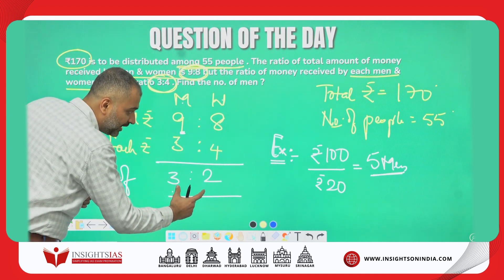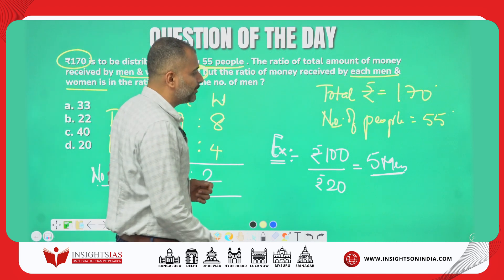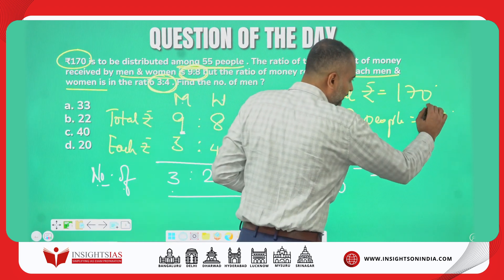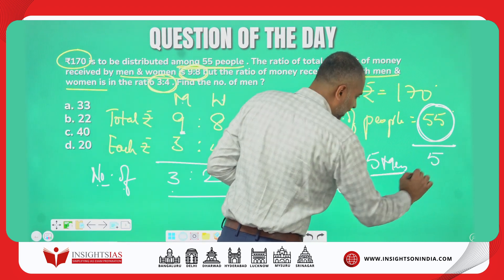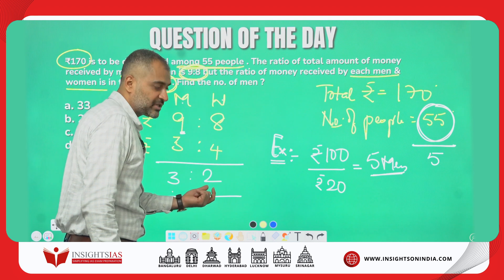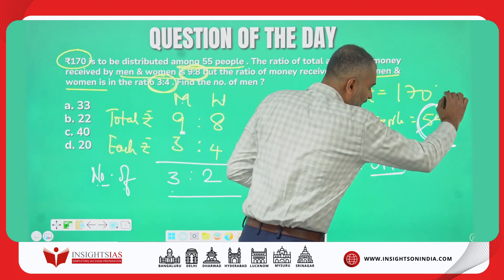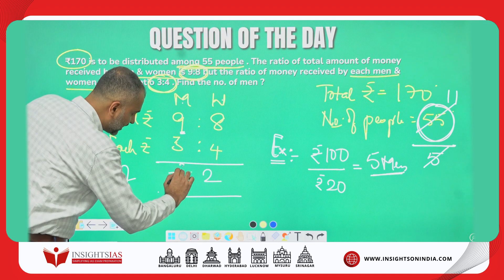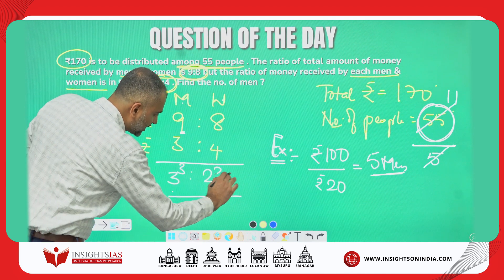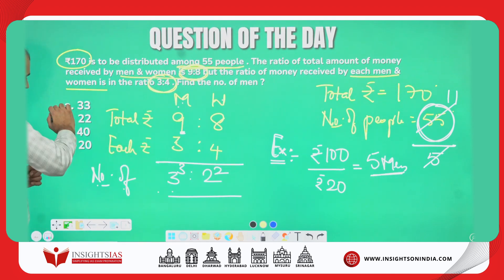They are in the ratio 3 is to 2. Now if I divide the total 55 people in the ratio 3 is to 2, that is 5 parts — 3 parts are men and 2 parts are women. So 1 part is 11. If 1 part is 11, then 3 parts are 33 and 2 parts are 22. So there are 33 men and 22 women.